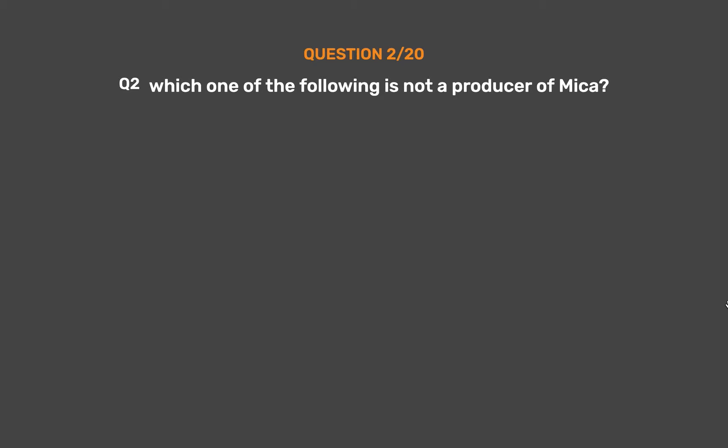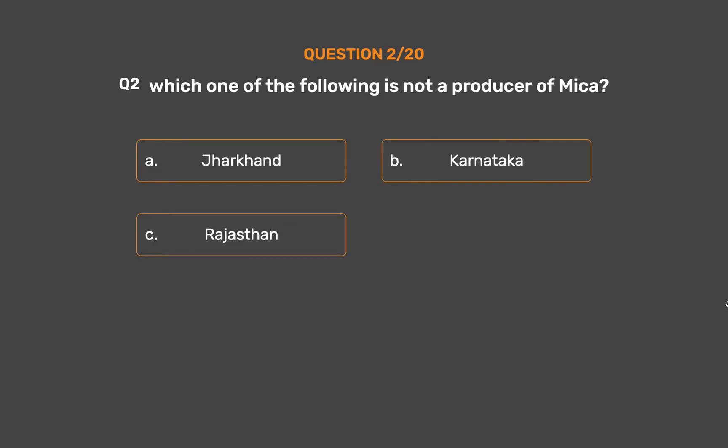Question 2: Which one of the following is not a producer of mica? Option A: Jharkhand. Option B: Karnataka. Option C: Rajasthan. Option D: Andhra Pradesh.